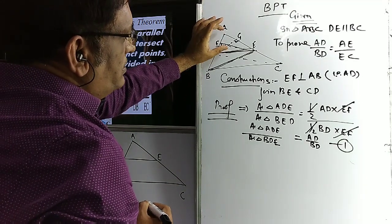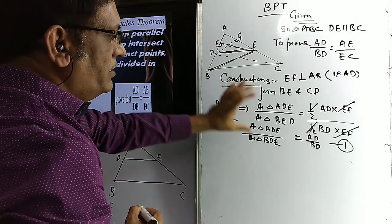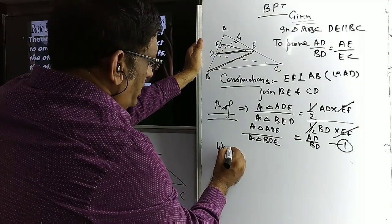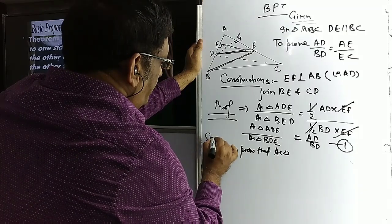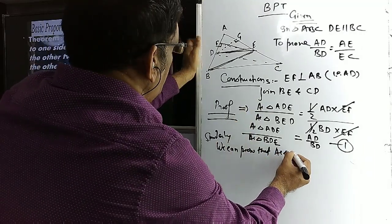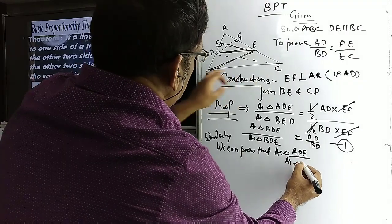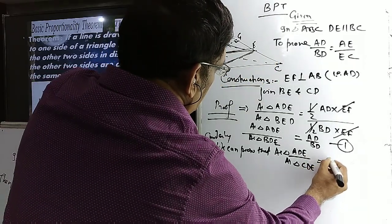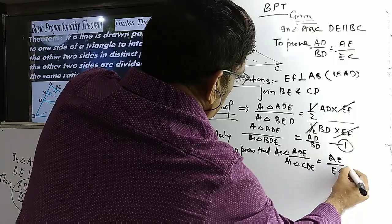Similarly, we can prove that area of triangle ADE / area of triangle CDE = AE/EC. This is equation number 2.